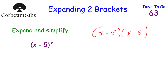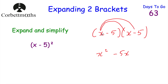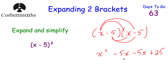Let's multiply both terms by x first: x times x is x squared, and x times minus 5 is minus 5x. Now multiply both terms by minus 5: minus 5 times x is minus 5x, and minus 5 times minus 5 — negative times a negative is a positive, 5 times 5 is 25 — so plus 25. Simplifying: minus 5x minus 5x is minus 10x, giving x squared minus 10x plus 25.